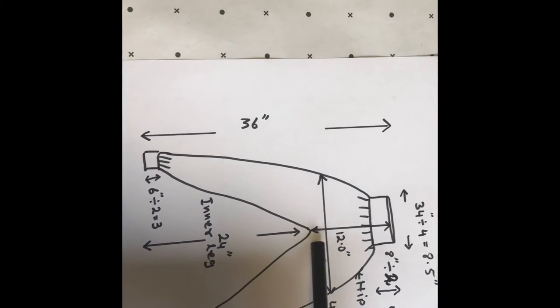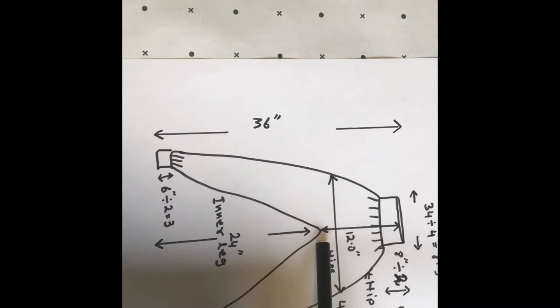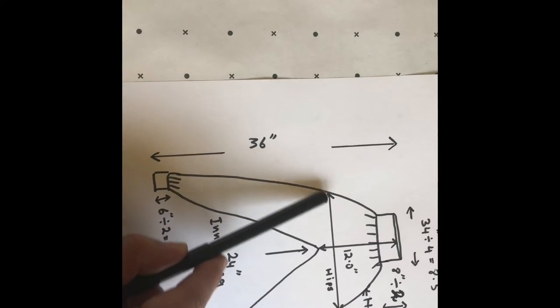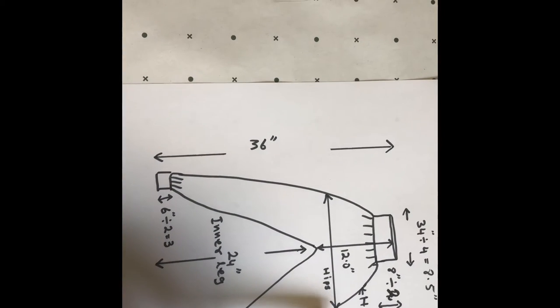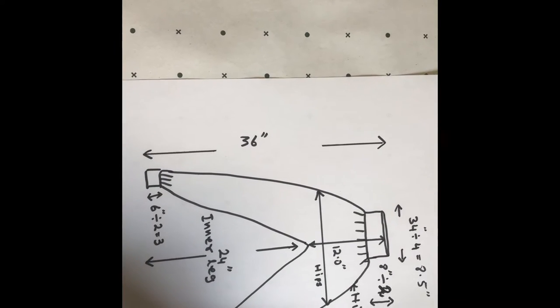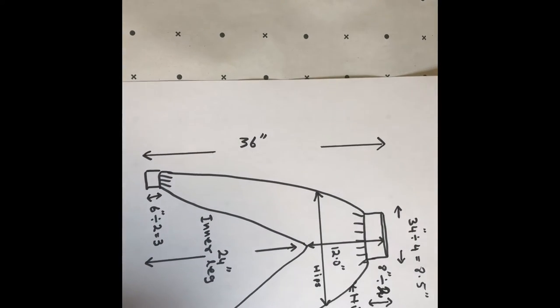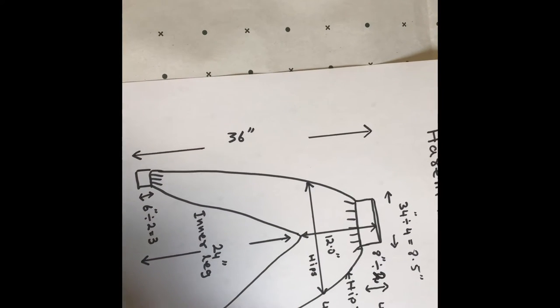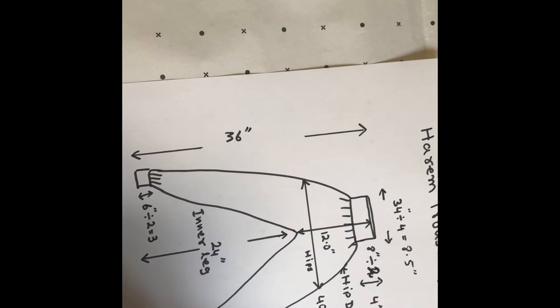Then I took hip measurement. My hips are 40 inches, so I divided 40 inches by 4 and plus 6 inches, because there is 6 inches for extra gathering to make the trouser look baggy. You can increase more folds if you want—it could be 8 inches.